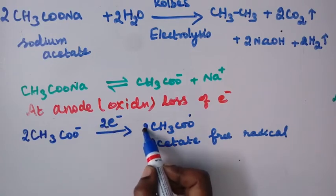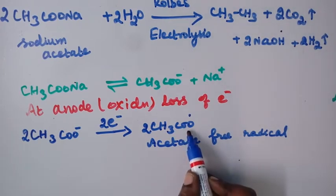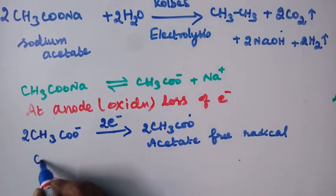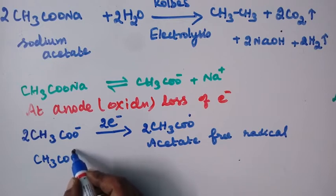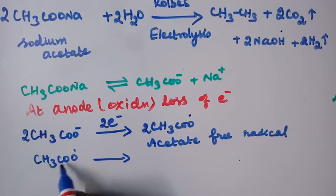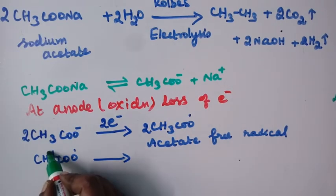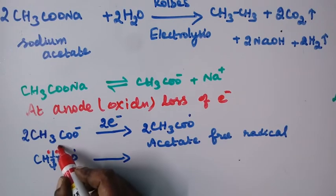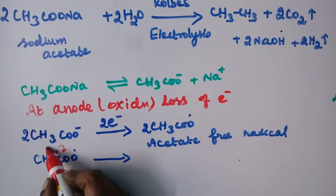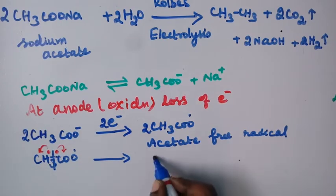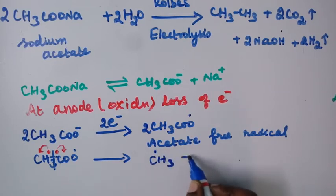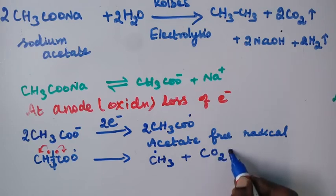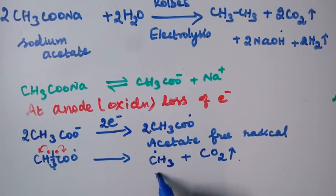The acetate free radical CH3COO• undergoes cleavage between the methyl group and the carboxyl carbon. This is a homolytic cleavage — one electron goes to carbon dioxide and another electron goes to the methyl group. So CH3 becomes a methyl radical with an unpaired electron, and CO2 takes one electron to form CO2 gas. In this step, we get methyl radical and carbon dioxide gas.